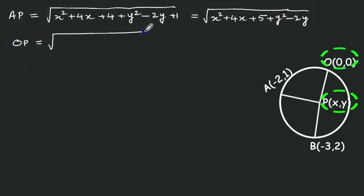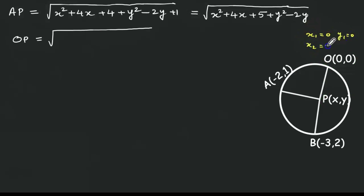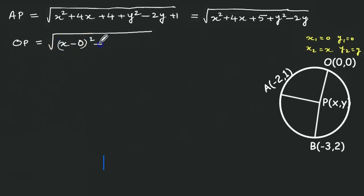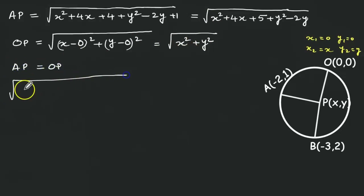Now we find the length of OP. Here x1 is 0, y1 is 0, x2 is x, and y2 is y. Substituting into the distance formula: OP equals root of (x minus 0) squared plus (y minus 0) squared, which equals root of x squared plus y squared. Since AP equals OP as they are both radii, we compare both values: root of x squared plus 4x plus 5 plus y squared minus 2y equals root of x squared plus y squared.